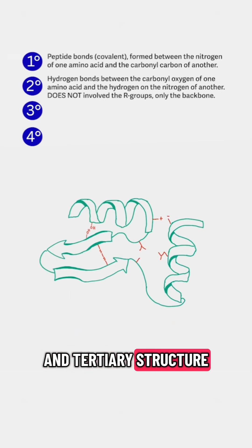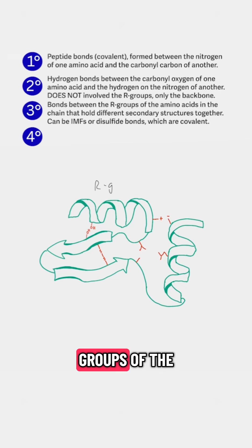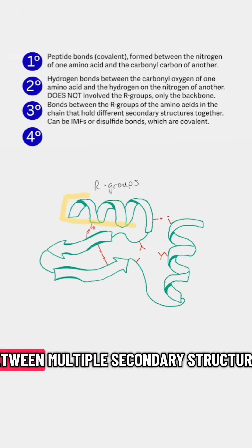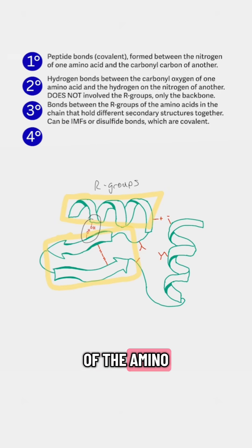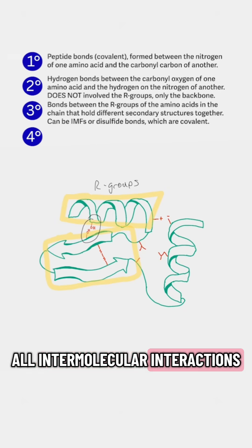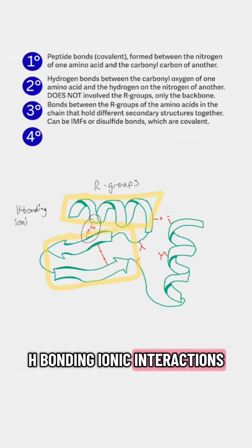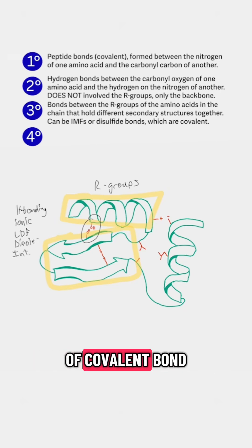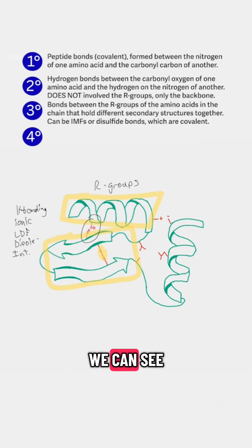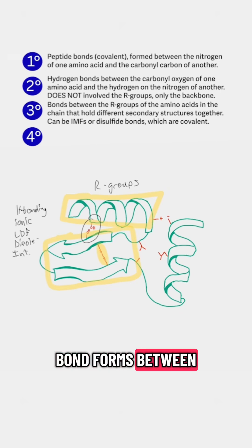Next, we have tertiary structure, and tertiary structure is held together by bonds between the R-groups of the amino acids in those peptide chains. Tertiary structure forms between multiple secondary structures — so we have a helix there and beta sheets here, and then bonds form between the R-groups of the amino acids in those chains. The types of bonds that can form are almost all intermolecular interactions, such as H-bonding, ionic interactions, London dispersion forces, or other dipole interactions. There is one type of covalent bond that can form, which is a disulfide bond between two cysteine residues — we can see that right here where a covalent bond forms between the two sulfurs.